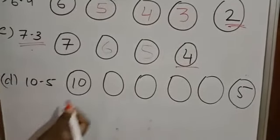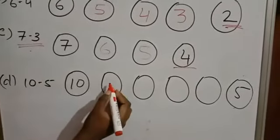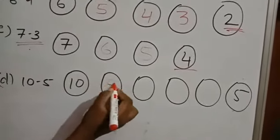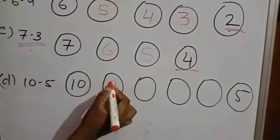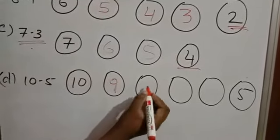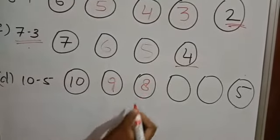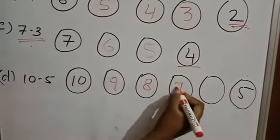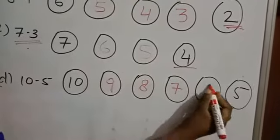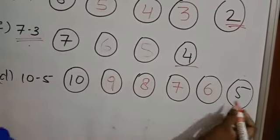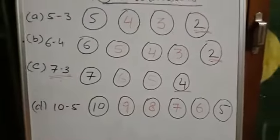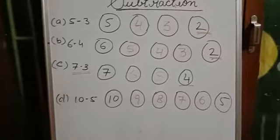Last one: 10 minus 5. Before 10 is 9, before 9 is 8, before 8 is 7, then 6, and 5. So the answer is 5. Like that, you have to do in your maths book.